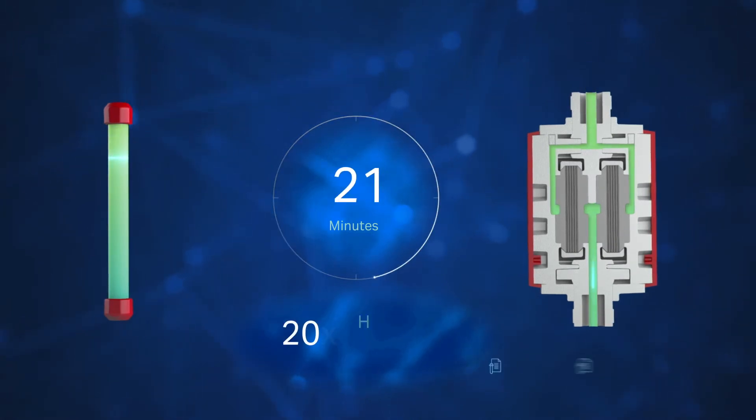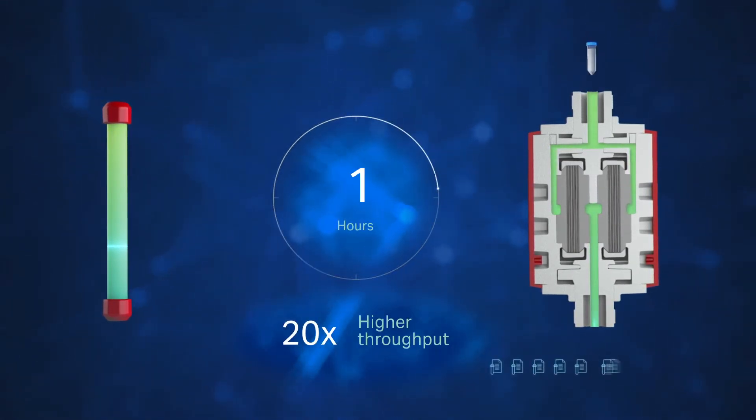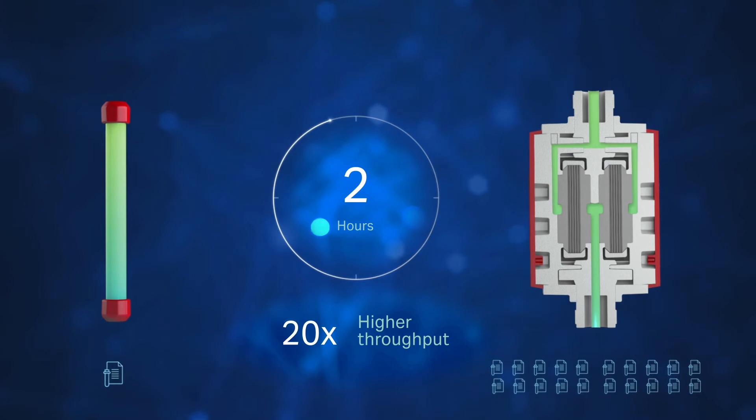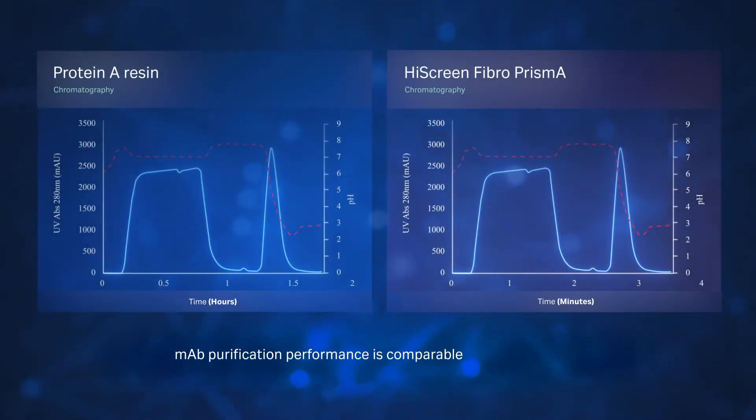Fibrochromatography enables up to 20 times higher throughput compared to traditional resin chromatography. The MAB purification performance is comparable to protein A resins, just faster, and a full chromatogram is generated for each cycle.